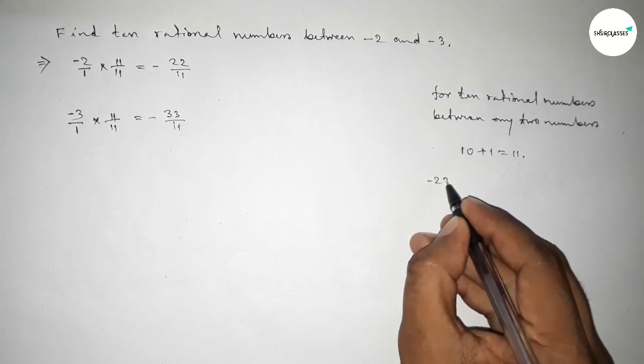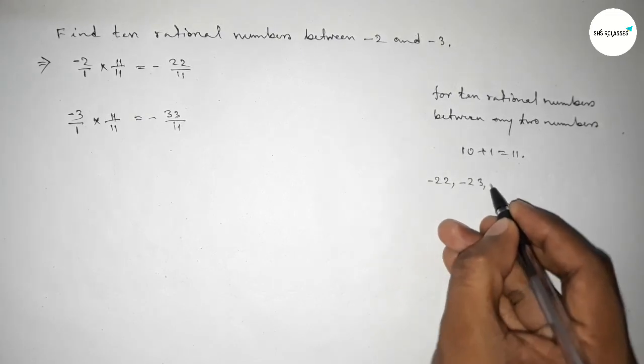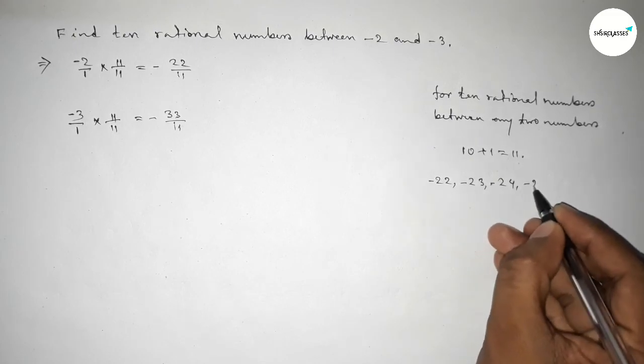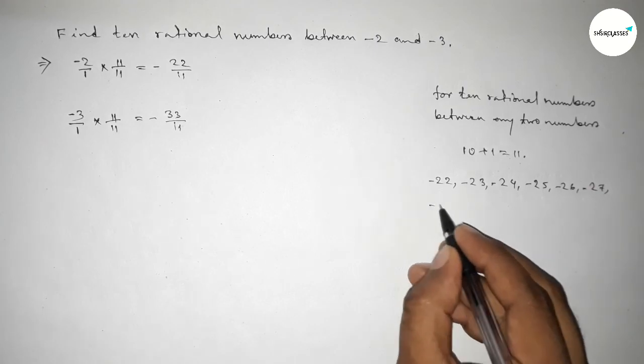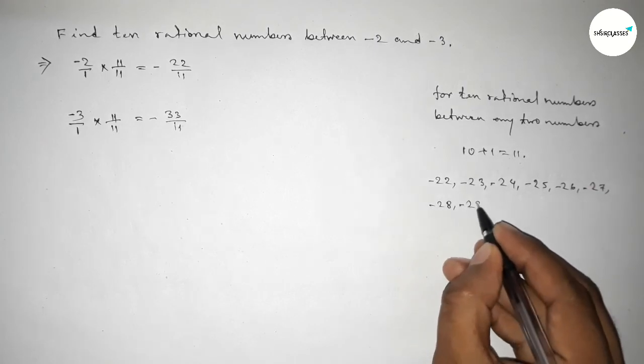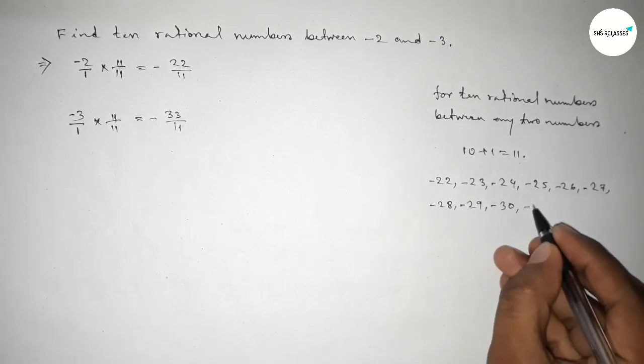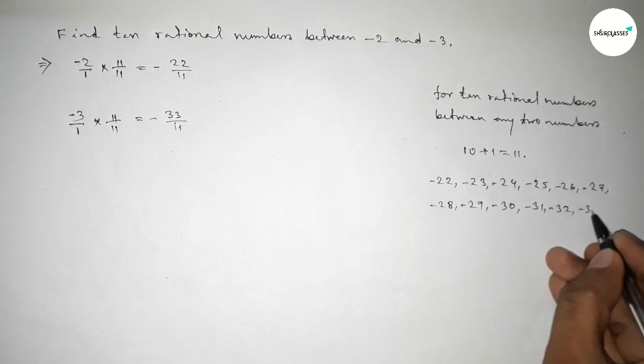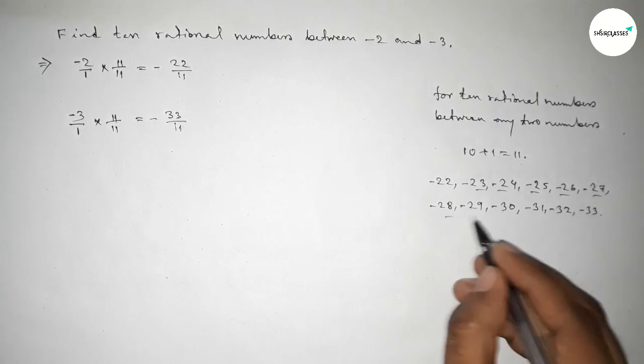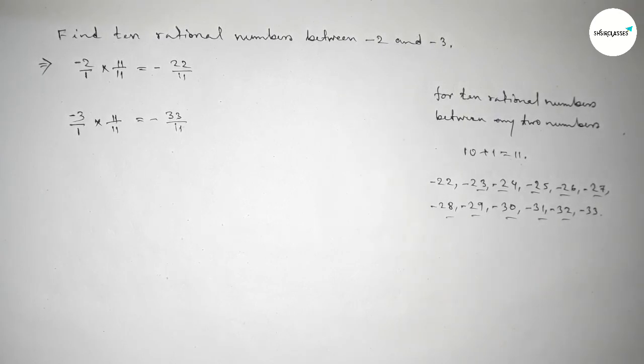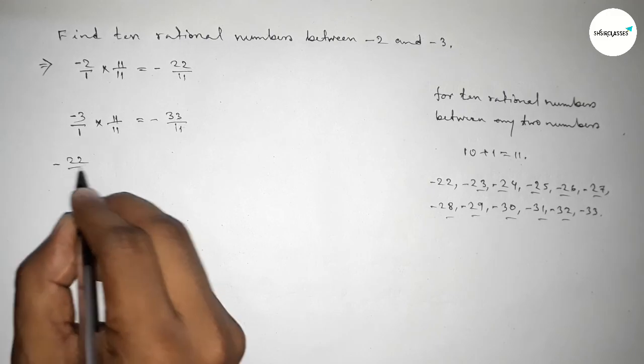Now write down all the negative integers between minus 22 to minus 33. So here all the negative integers, okay. So among these, these are the required 10 negative integers. Now forming all the rational numbers.